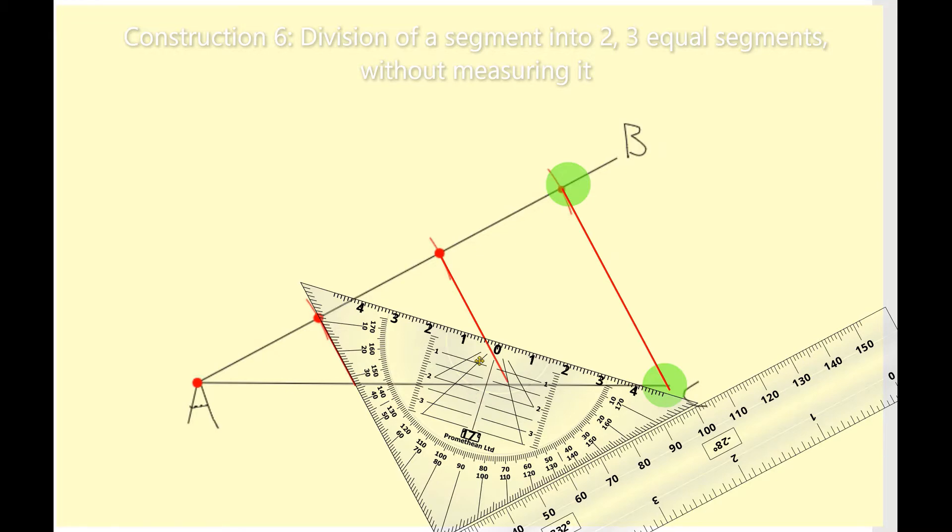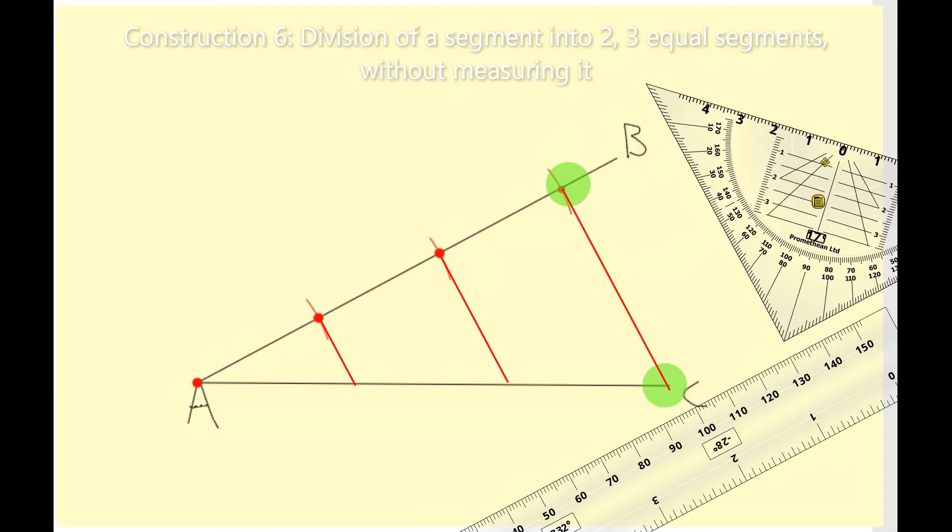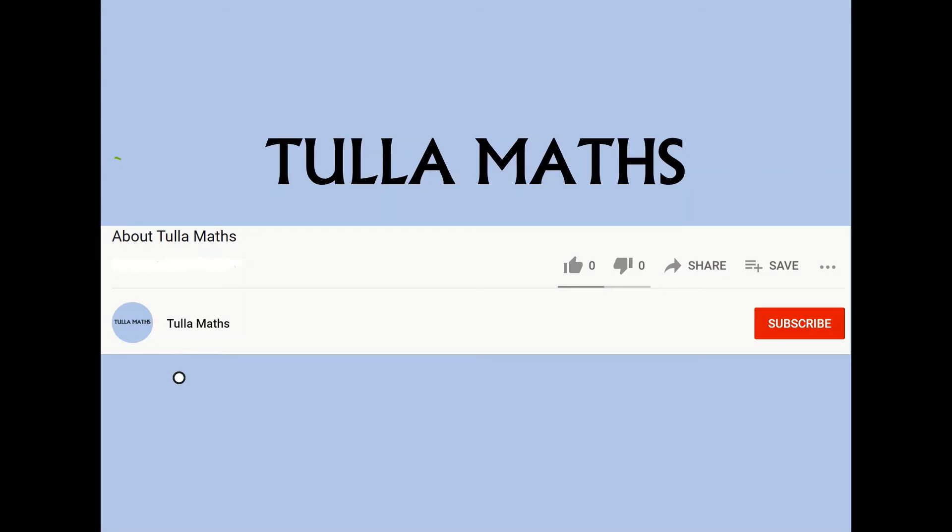And if I remove my set square, I have now constructed three equal segments along that line segment AB and AC. And that is construction six. Thank you for watching another tutorial video from Tullamats. Make sure and subscribe.